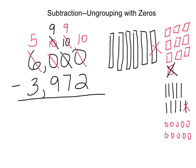So now, I'm going to move along and try my subtraction. Ten take away two is eight. Nine take away seven is two. Nine take away nine is zero. And five take away three is two.